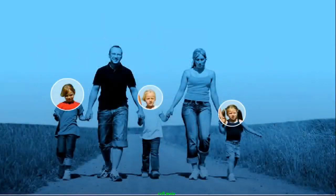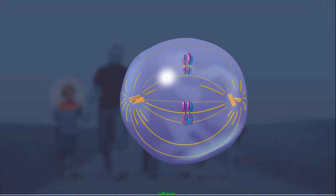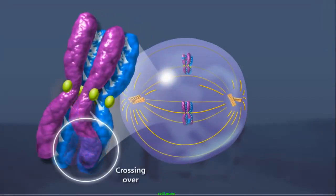But why aren't siblings identical? The diversity comes from several sources. In prophase I, non-sister chromatids can exchange DNA through crossing over, increasing the genetic diversity of individual chromatids.